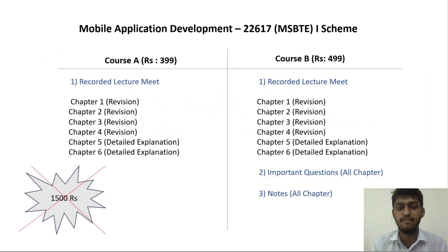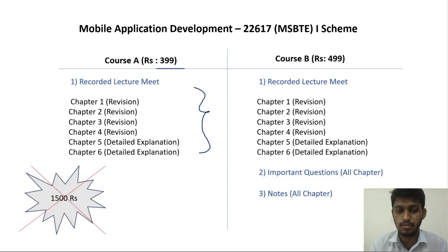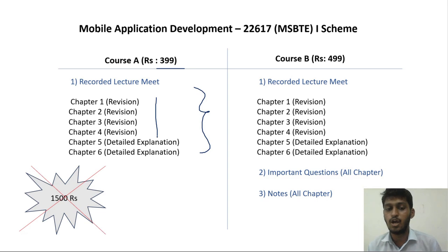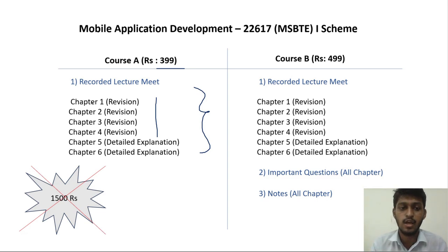I have two courses available for you. Course A is 399. You will get all the recorded videos of chapter number 5 and chapter 6. I will give you a detailed explanation of chapters 5 and 6, and chapters 1 to 4 you can use for revision. It will be detailed but you can revise. So this is course A for 399 — you will get all the recorded lectures.